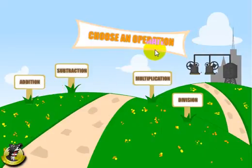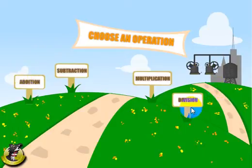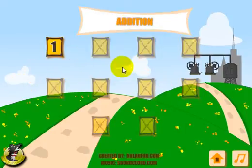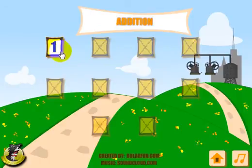This menu lets you choose the skill that you want to practice. Although this is a rounding game, you will be able to practice either division, multiplication, subtraction, or addition. Let's go ahead and click addition. When you first start out, only the first levels are available to you, and as you complete the levels, the other levels will open up. Let's go ahead and click the first level here.